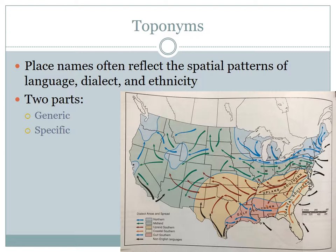Toponyms can also reflect regional dialects because different American dialects have different toponyms associated with them. New Englanders who speak the northern dialect often use the term 'center' as well as directional prefixes — east, west, north, and south — with specific names of the township as the suffix. For example, there's Randolph Center and South Randolph in Vermont. This prompted a look into North Las Vegas: the person who settled it was Thomas Williams, who moved from Eureka, Utah, which is just south of Salt Lake City — within the northern dialect region.